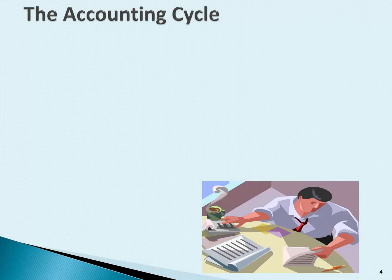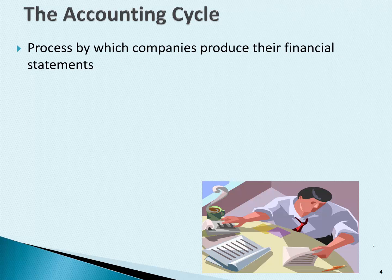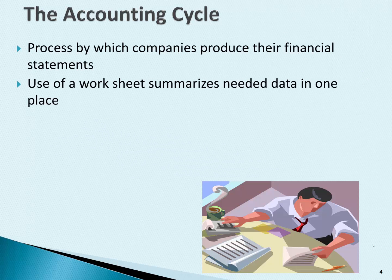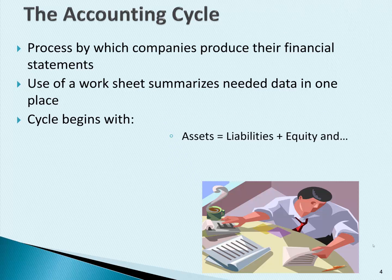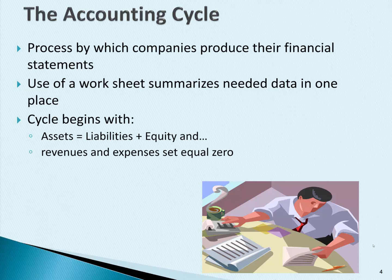Now we're going to learn how to finish the accounting cycle. The accounting cycle is the process by which companies produce their financial statements. Worksheets help by summarizing lots of data in one place. The accounting cycle begins with assets equals liabilities plus equity, and revenues, expenses, and draws are set to equal zero because they are temporary accounts.